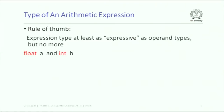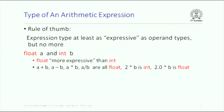For example, if I have float a and int b, the float is more expressive than int, and therefore a+b, a-b, a*b, a/b are all float — because one of them is float and the other is integer, so int will be converted to float. On the other hand, 2*b will be evaluated as integer because 2 is an integer constant. But if I write 2 as 2.0, then 2.0*b will be evaluated as a floating point value.